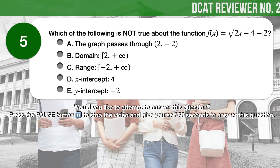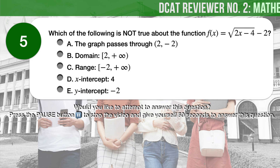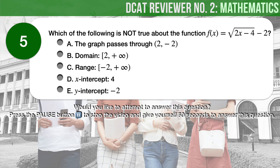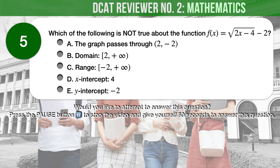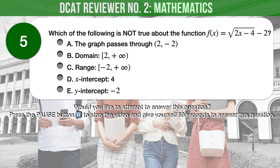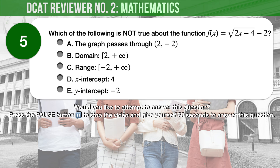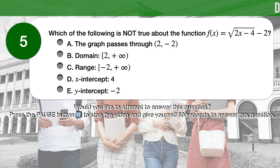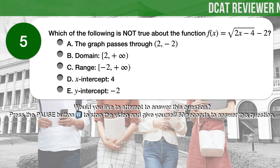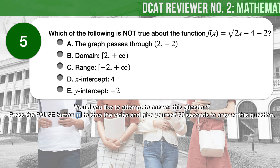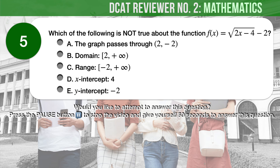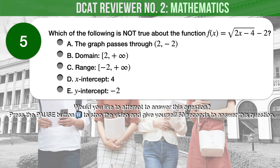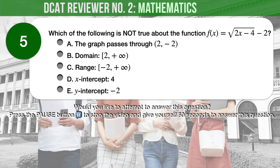Question number 5. Which of the following is not true about the function f(x) equals the square root of the quantity 2x minus 4, minus 2? A. The graph passes through the point (2, negative 2). B. The domain is the interval from 2 to infinity, excluding infinity. C. The range is the interval from negative 2 to infinity, excluding infinity. D. The x-intercept is 4. E. The y-intercept is negative 2.